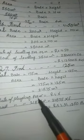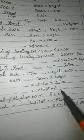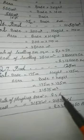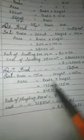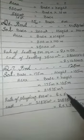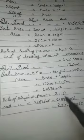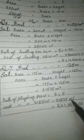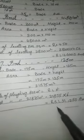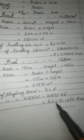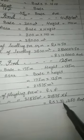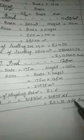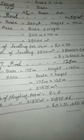The rate of ploughing per meter square is 6 rupees. For cost, we multiply the rate by the area. The answer is 1,31,250 rupees.